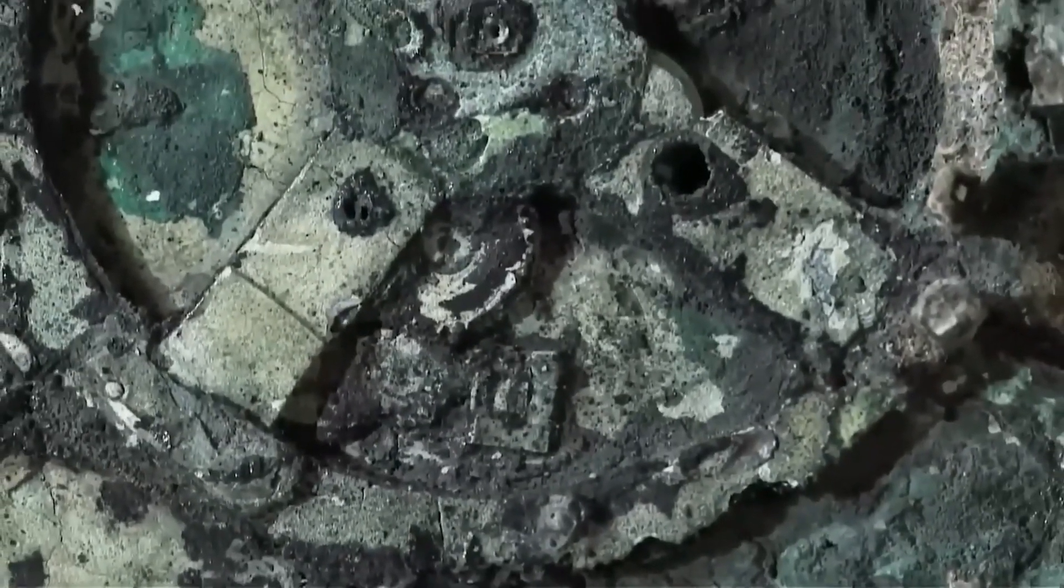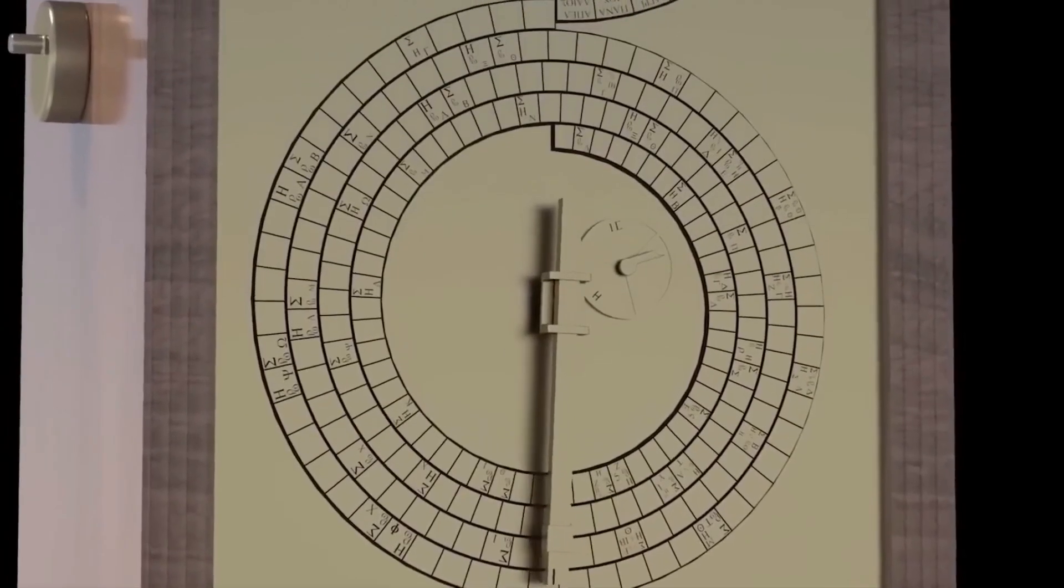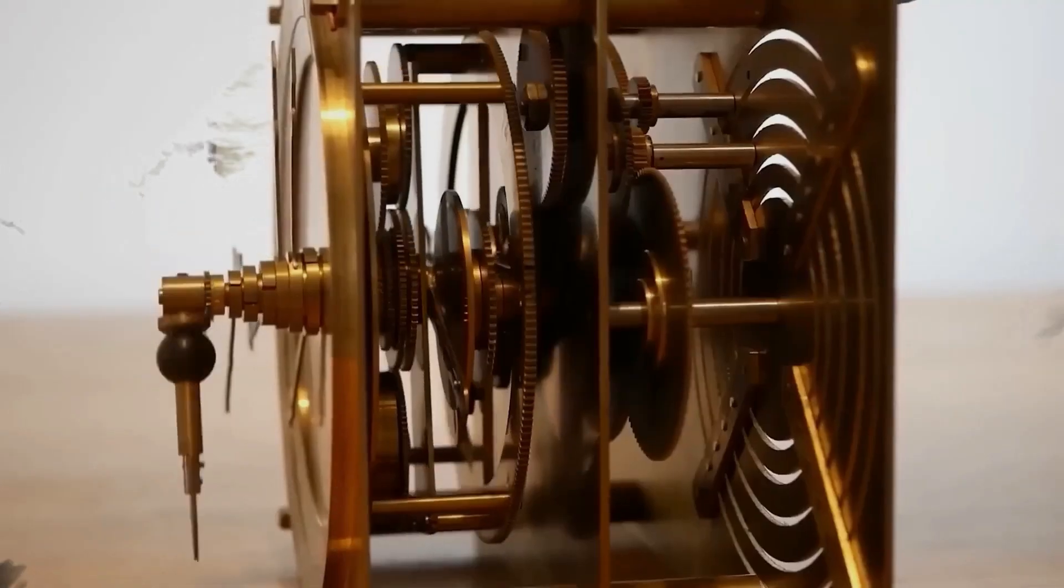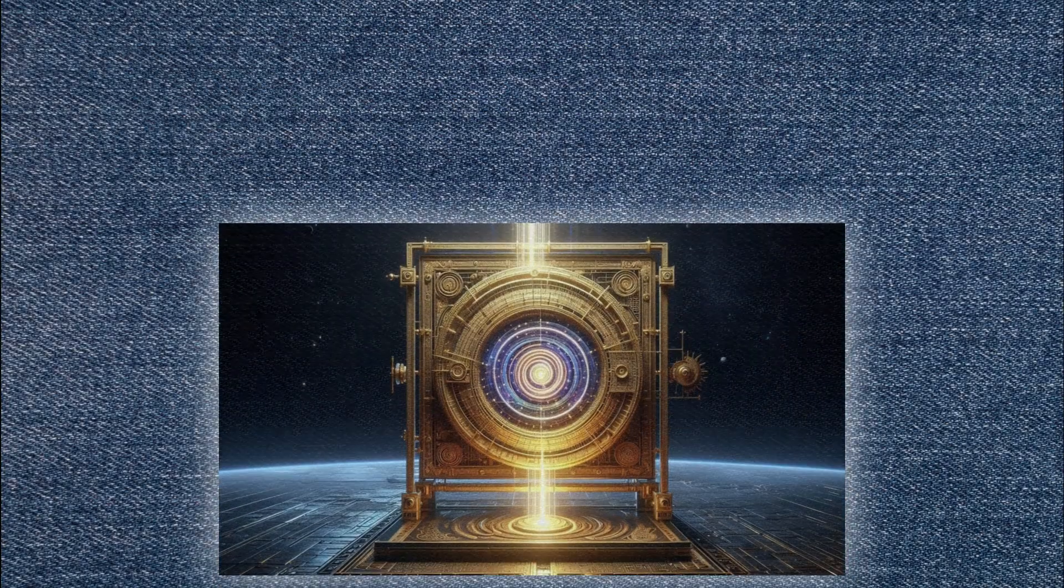Staius' discovery prompted questions about the device's purpose and creators. Early theories suggested it was an astrolabe, a tool for measuring star positions. But the presence of gears hinted at something more advanced.